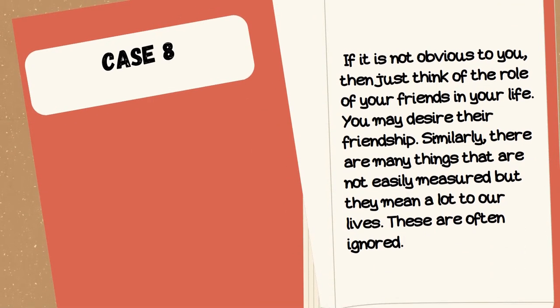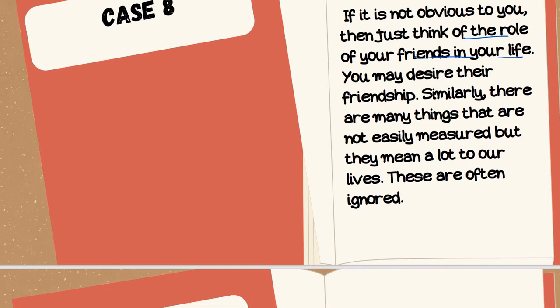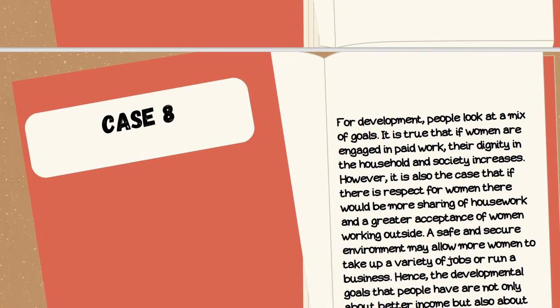If it is not obvious to you then just think of the role of your friends in your life. You may desire their friendship. Hume kya hota hai ki humare friends humare saath friendship maintain karkar karke. Similarly there are many things that are not easily measured but they mean a lot to our lives. These are often ignored.